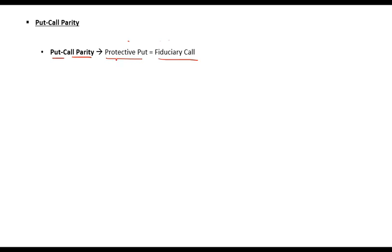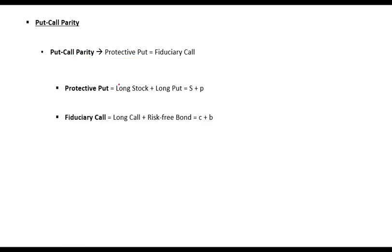Now the question is: what is protective put and what is fiduciary call? Protective put is a position or a portfolio in which you buy an asset and you buy a put option on that asset. If you buy an asset and buy a put option on that asset, that is known as protective put.